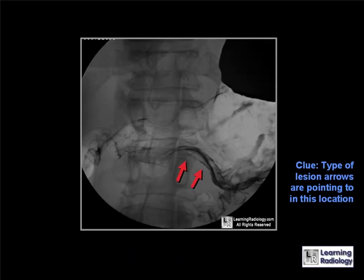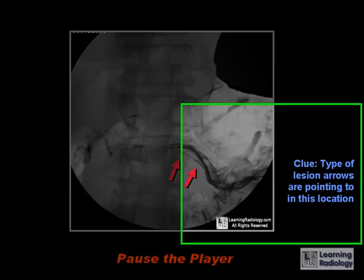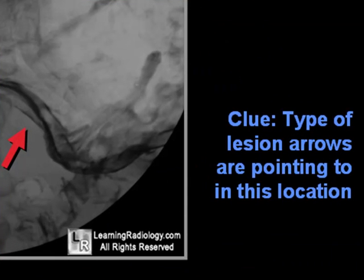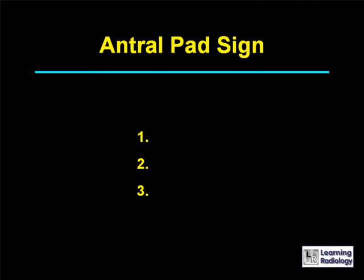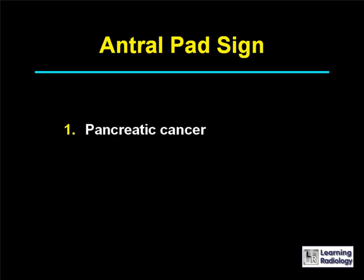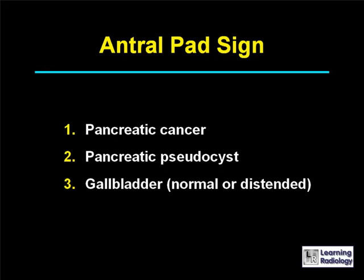The next differential diagnosis is for an antral pad sign. There are three main causes: pancreatic cancer, a pancreatic pseudocyst, or an enlarged or sometimes normal gallbladder.